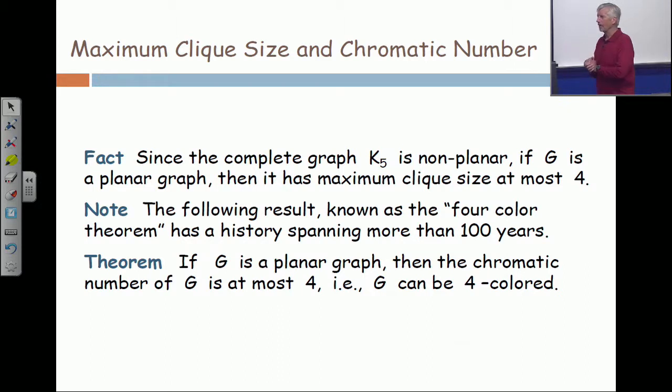All right. Now, what is the chromatic number? Ooh. Ooh. All of a sudden, this becomes hard. And I've let the cat out of the bag by just telling you what the theorem is. The theorem is if a graph is planar, then it can be four-colored. The chromatic number is at most four. And this is called the four-color theorem. And it has a history which is, well, I say 100 years. It's much, much older than that.